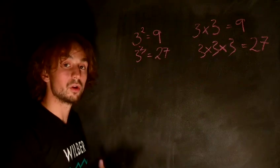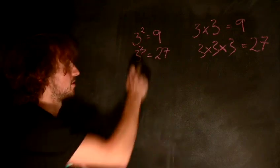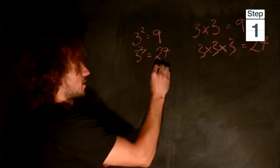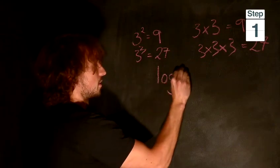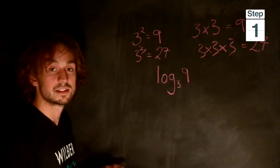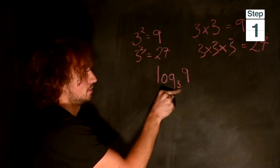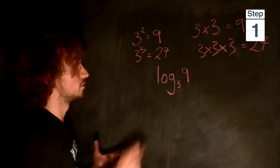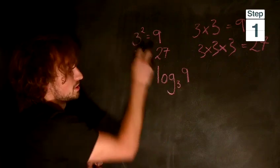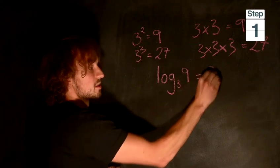Now a logarithm basically undoes this process. So if I was to write log base 3 of 9, this says to me 3 to the power of what is equal to 9? We know that 3 to the power of 2 is equal to 9, so the answer is 2.